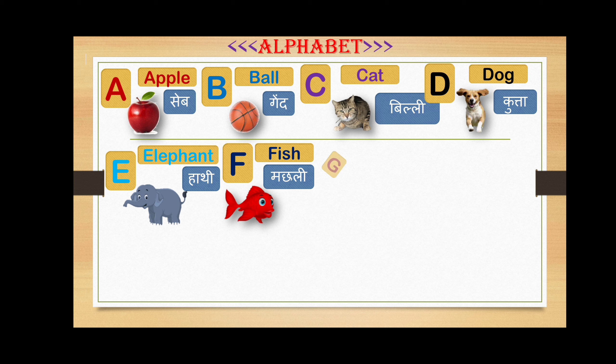Our seventh alphabet is G. G for grapes.